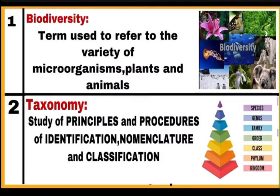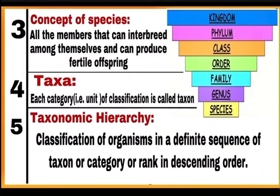Taxonomy: it is the study of principles and procedures of identification, nomenclature and classification of organisms, or it is the branch of science concerned with identifying, naming and classifying organisms. Concept of species: all the members that can interbreed among themselves and can produce fertile offspring belong to one species, or individuals of one species are capable of exchanging genes or can interbreed among themselves. Taxa: each category or unit of classification is called a taxon, such as species, genus, family, class, order — all these are different categories or taxon.